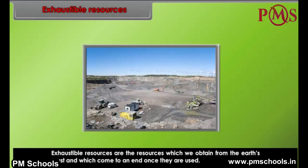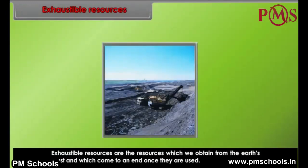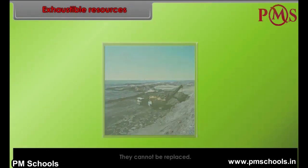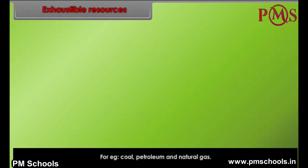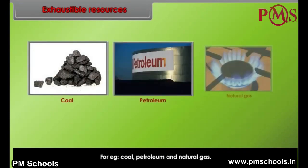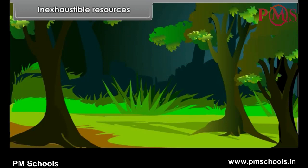Exhaustible resources are those resources which we obtain from the earth's crust and which come to an end once they are used — they cannot be replaced. For example, coal, petroleum, and natural gas.